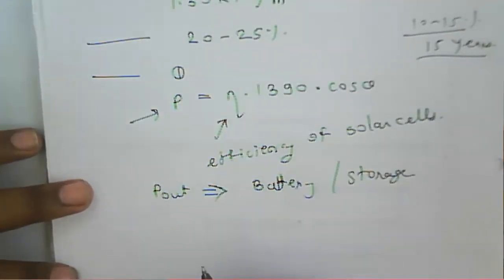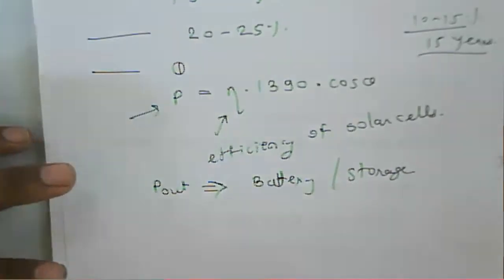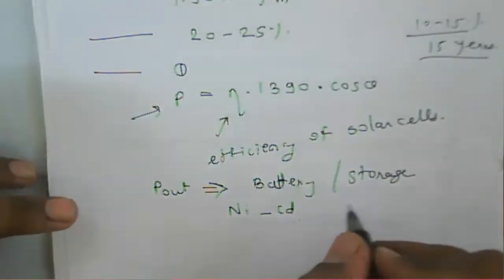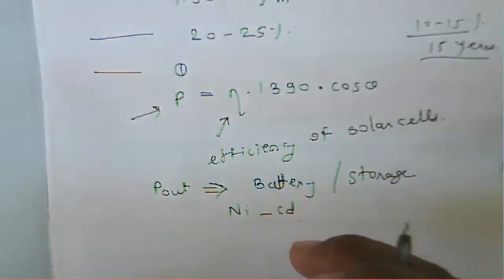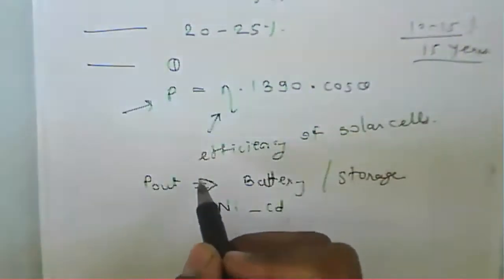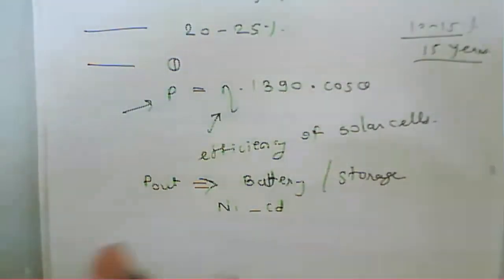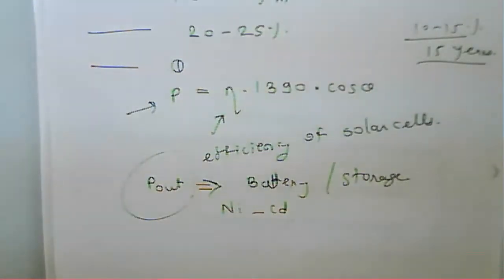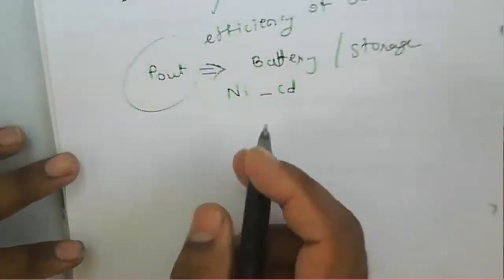Inside the satellite, rechargeable batteries are used — using nickel cadmium or nickel hydrogen chemistry — for storing energy. The storage must be sufficient to generate the power required by the satellite during eclipse periods. If the battery cannot generate enough power, some components need to be switched off, and only a few critical components remain on to maintain communication.